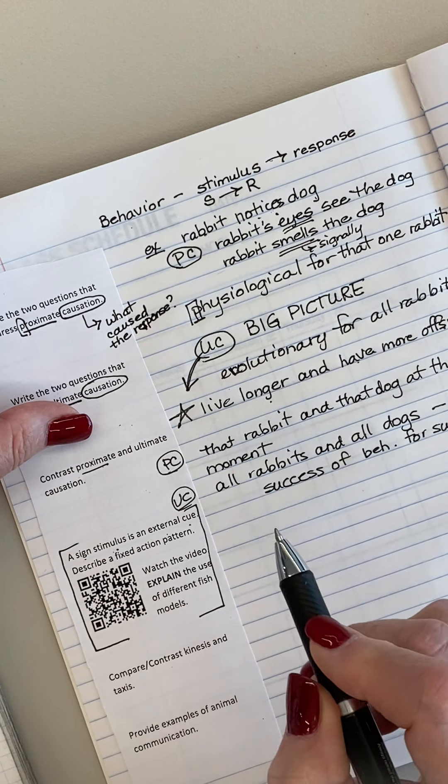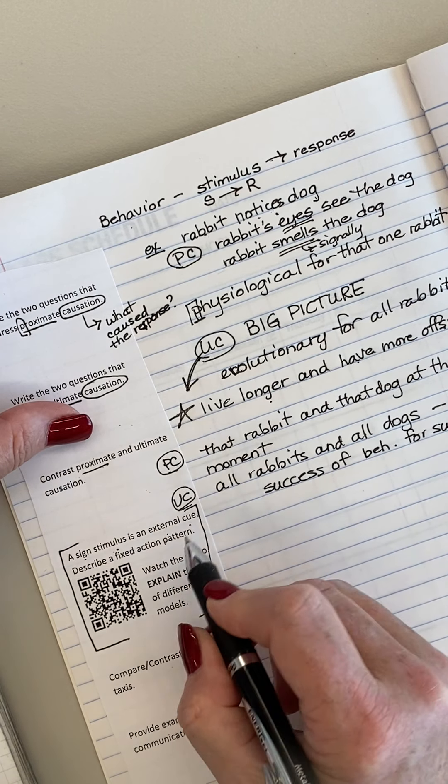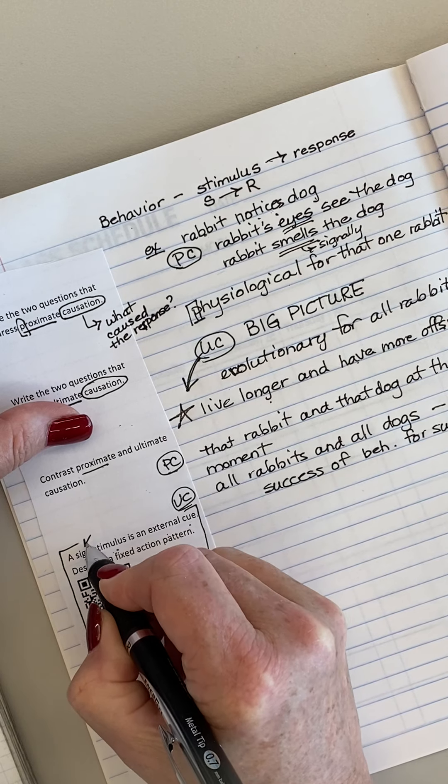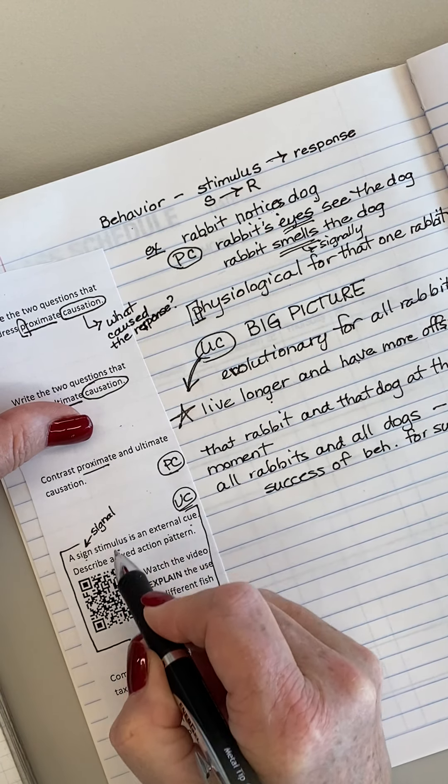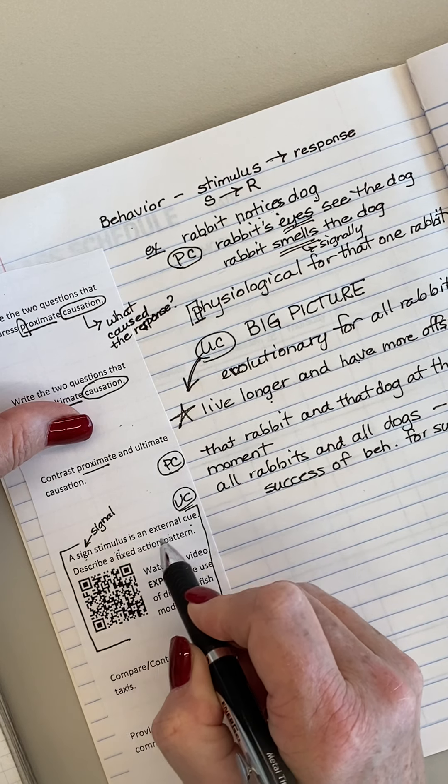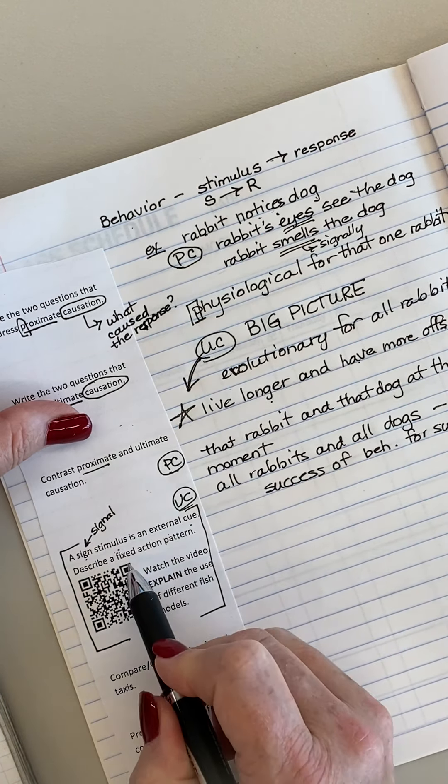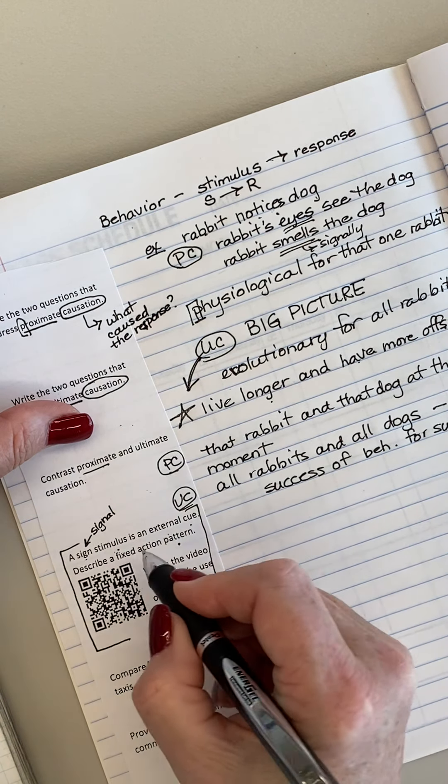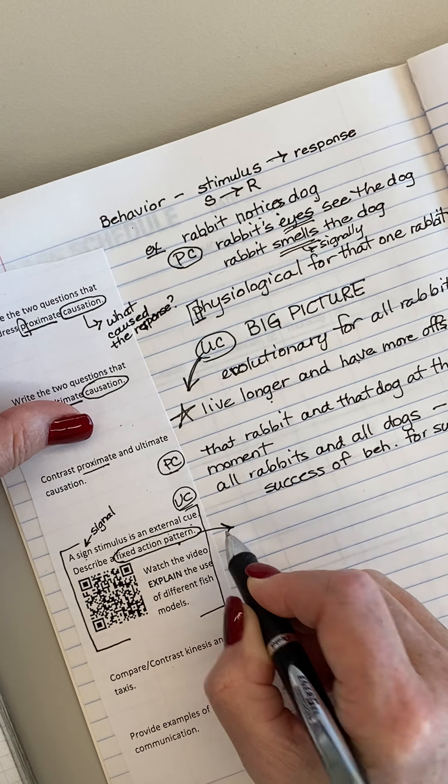A sign stimulus has a predictable response. So you're going to have a sign. This is going to be the same thing as a signal that's going to be perceived by the fish, and it's going to give you a predictable outcome. So a fixed action pattern is a different kind of behavior. So let's talk about that first.